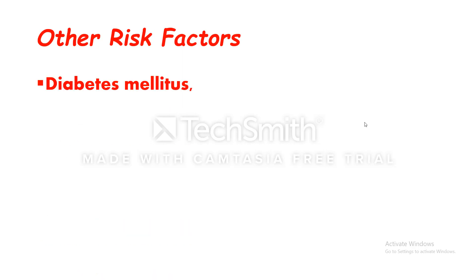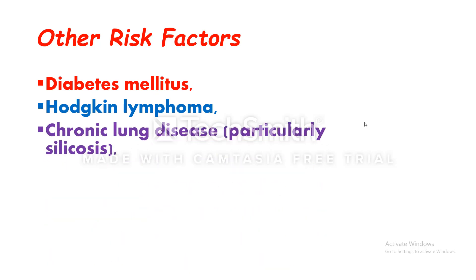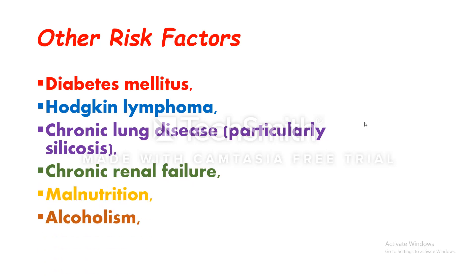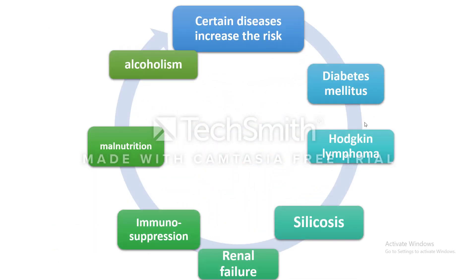Other risk factors for tuberculosis include diabetes mellitus, Hodgkin lymphoma, chronic lung disease particularly silicosis, chronic renal failure, malnutrition, alcoholism, and immunosuppression. Anything which lowers immunity or causes a debilitating condition increases the risk.